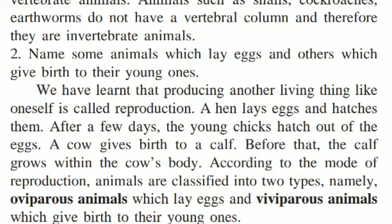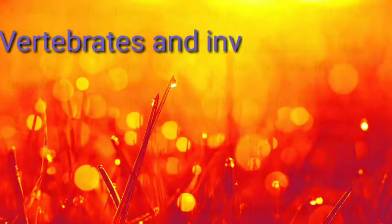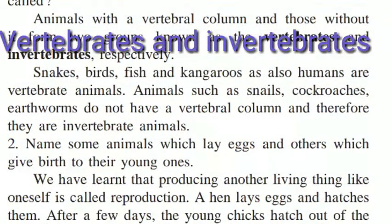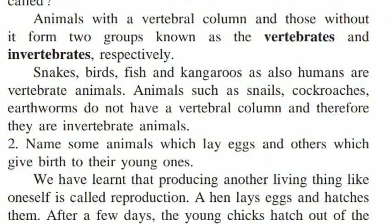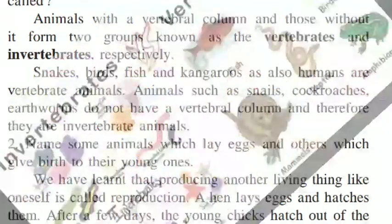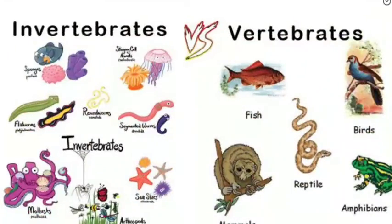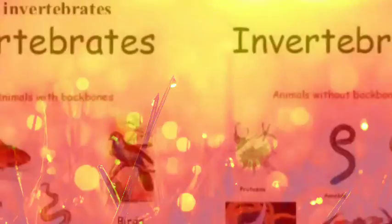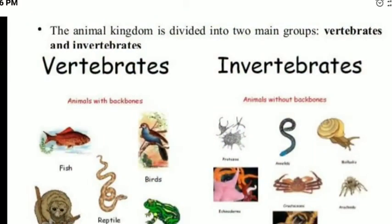The third type of classification is vertebrates and invertebrates. Animals with a vertebral column are called vertebrate animals, whereas animals without a vertebral column are known as invertebrates.